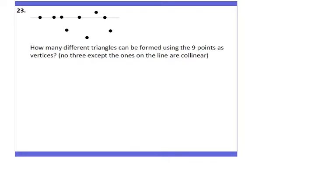How many different triangles can be formed using nine dots as vertices, where no three dots except the ones on a line are collinear? You need three dots to make a triangle, so the question is: how many groups of three dots can I choose from the nine available dots? That would be done in 9C3 ways.